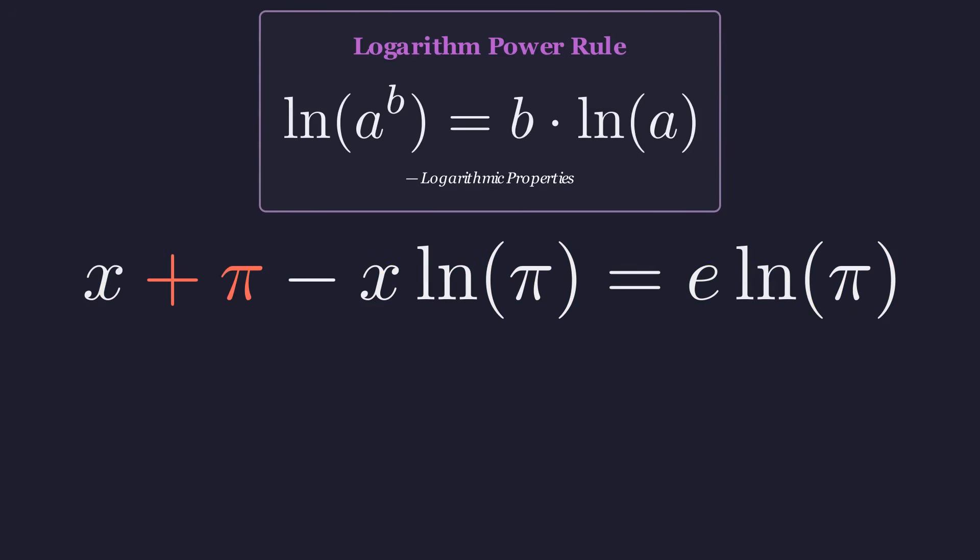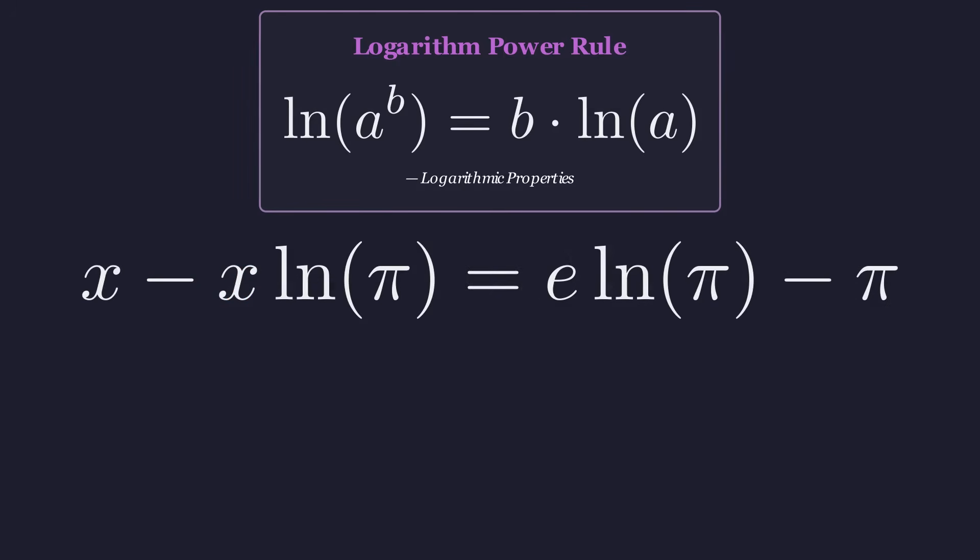Next, let's move all the constant terms to the right side. We'll subtract pi from both sides. Now the equation is nicely sorted with variables on the left and constants on the right.